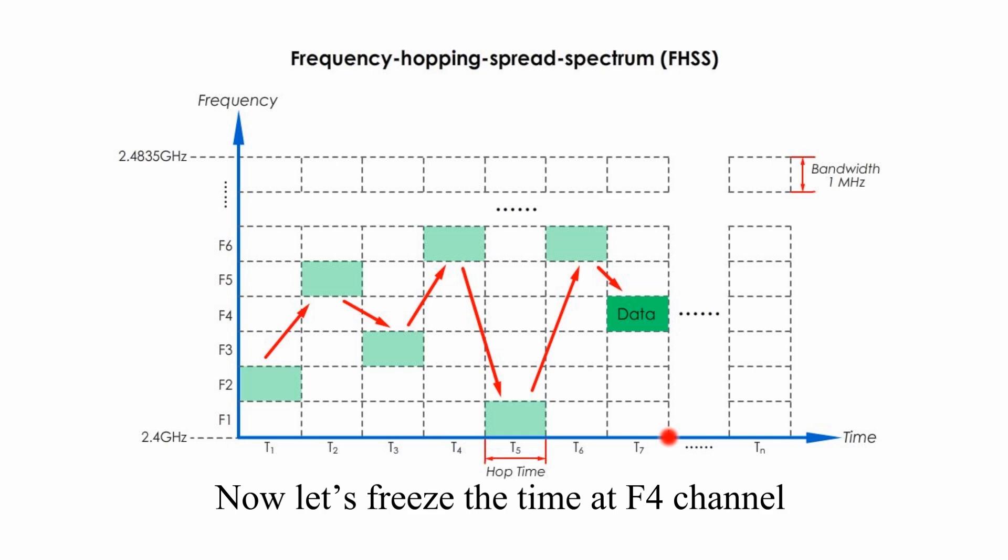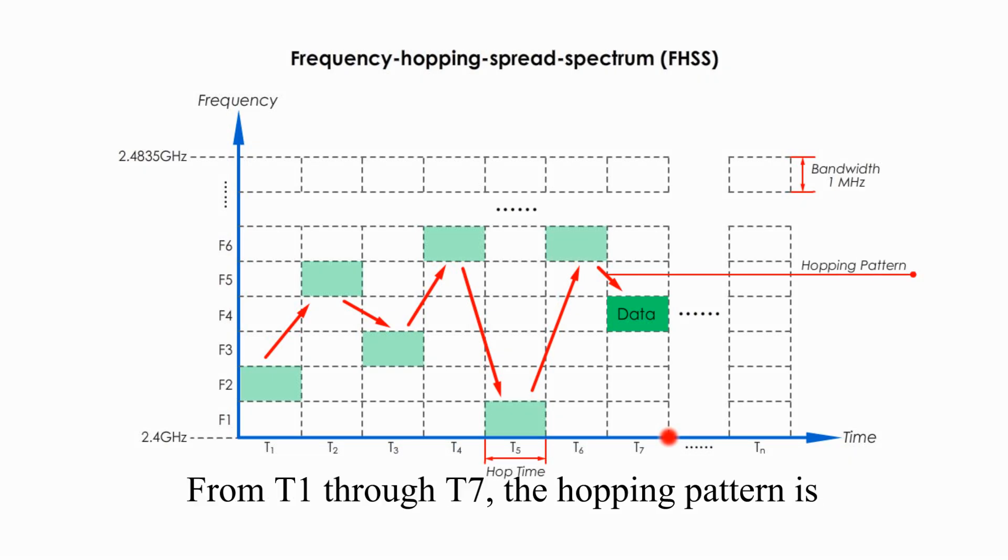Now, let's freeze the time at F4 channel, so that we can see the hopping pattern so far. From T1 through T7, the hopping pattern is F2, F5, F3, F6, F1, F6 again, and then F4. From the demonstration, we could see why this type of transmission method is called frequency hopping spread spectrum.